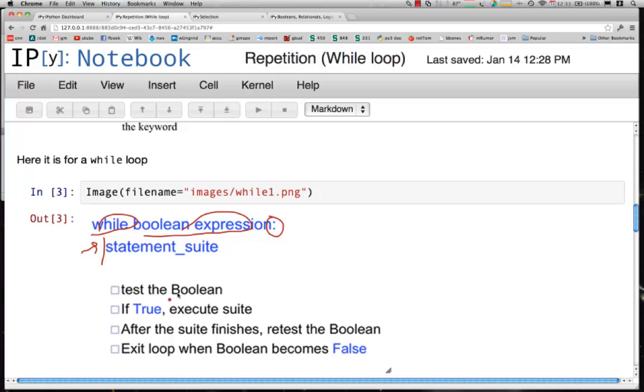As I said before, we test the Boolean. If it is true, we execute the suite of statements. At the end, then we would go back and re-execute the Boolean over and over again until the Boolean becomes false. At the time that the Boolean becomes false, then we execute the rest of the statements.